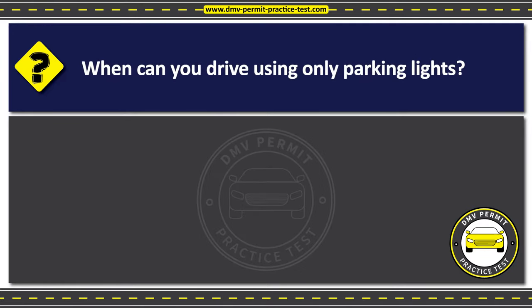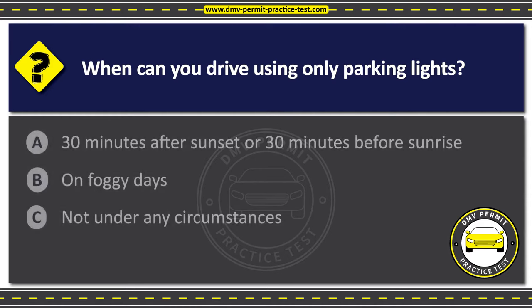Question 2. When can you drive using only parking lights? Option A: 30 minutes after sunset or 30 minutes before sunrise. Option B: On foggy days. Option C: Not under any circumstances. The correct answer is Option C: Not under any circumstances. Using parking lights instead of headlights can impair your visibility and make it difficult for other drivers to see your vehicle, increasing the risk of accidents.